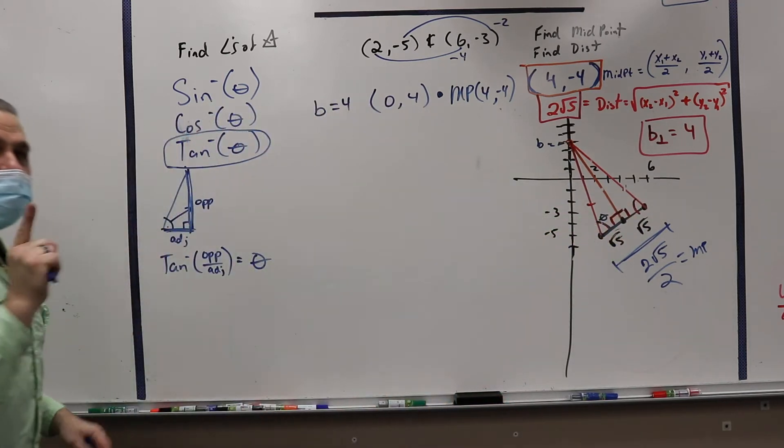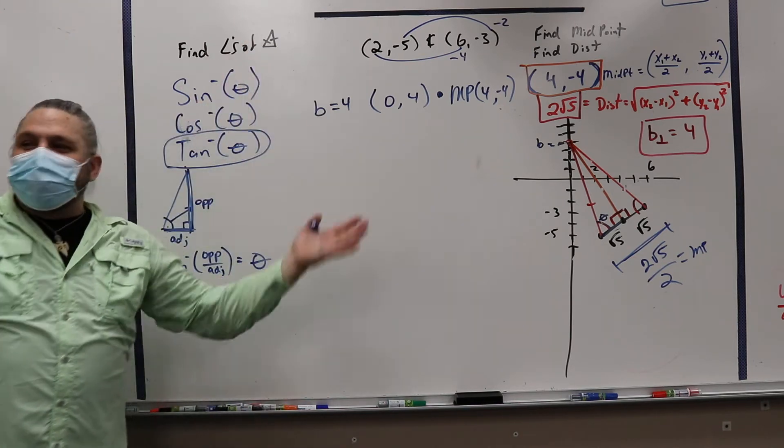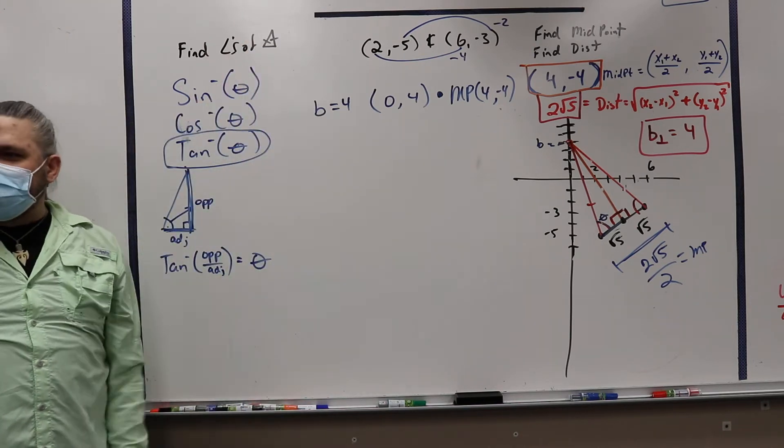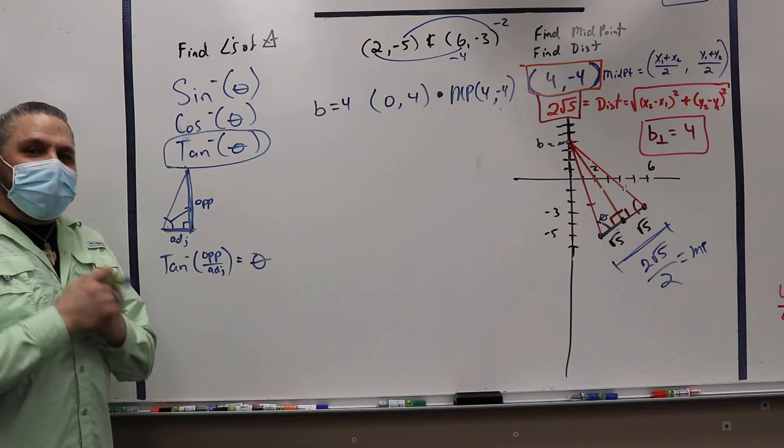So you could use what? Cosine. And then if you wanted to find all the sides, you could use sine. Right? But we already found the adjacent side.